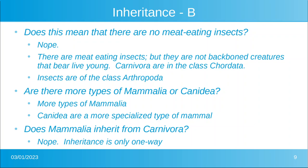Are there more types of mammals or canines? Obviously more mammals — canine is a more specialized grouping. Does mammal inherit from Carnivora? Nope. Inheritance is one way, top-down: carnivores inherit from mammals, but mammals do not inherit from carnivores. There are plenty of mammals that are herbivorous or omnivorous — for example, horses or cows.